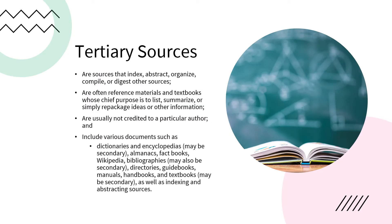Tertiary sources are sources that index, abstract, organize, compile, or digest other sources. They're often reference materials and textbooks whose chief purpose is to list, summarize, or simply repackage ideas or other information. They're usually not credited to a particular author. Think about something like an encyclopedia — there's not usually a named author on each entry. Wikipedia is a great example of a tertiary source: it doesn't do new research like a primary source, and it doesn't really analyze what research means like a secondary source. Instead, it just collects and gathers that information and gives it to readers.